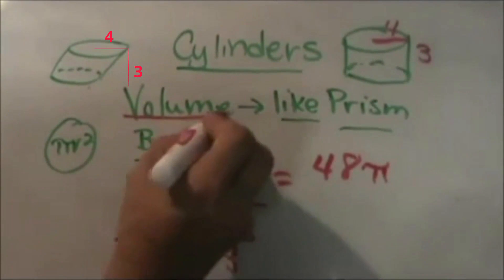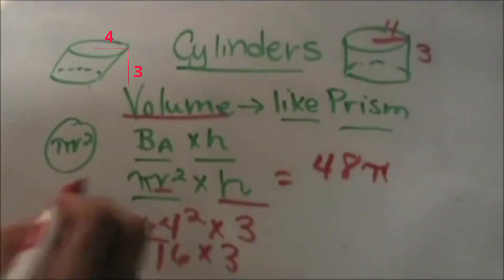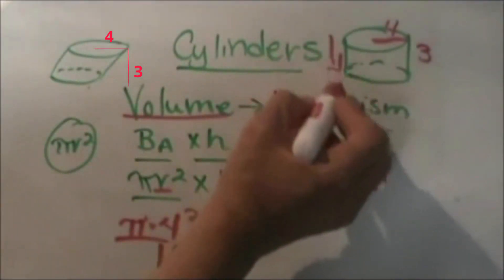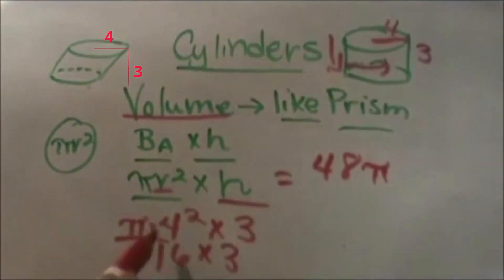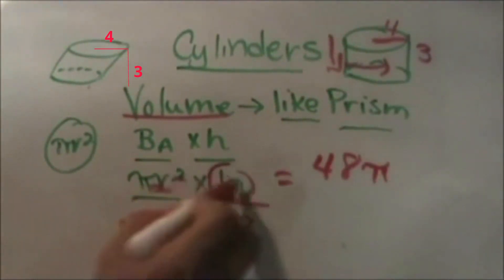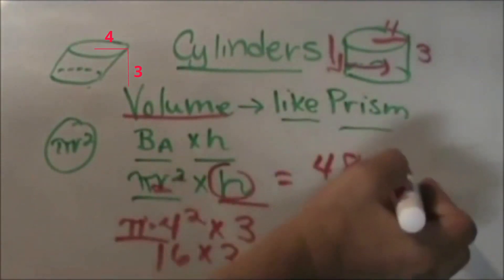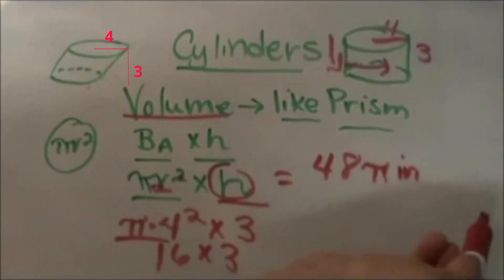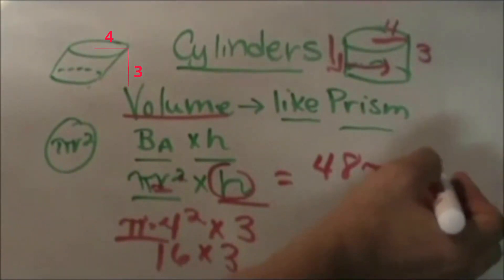Since this is volume, our units are always three-dimensional because volume is length, width, and height. Notice we're taking radius squared, which is area, times height, which gives us the third dimension. So that is going to be inches, centimeters, whatever, cubed.